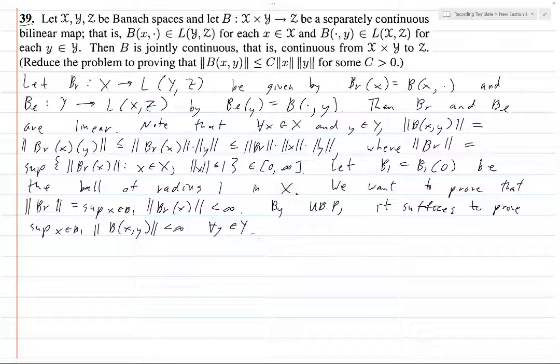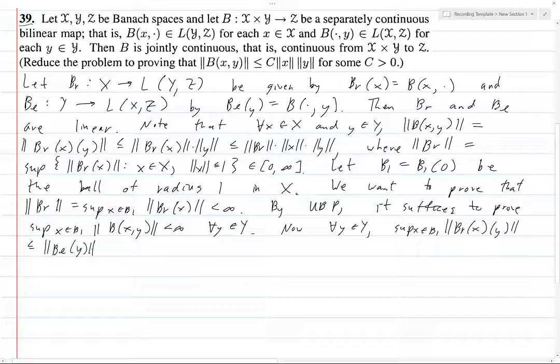So for all y ∈ Y, the supremum over all x in B_1 of ||B_r(x)(y)|| is certainly going to be less than or equal to ||B_l(y)||, and this is finite. And why is that? That is because B_l(y) is B(·, y), and this is a linear functional from X to Z. And so that means it's bounded, so its bound is finite. So that means by uniform boundedness principle that ||B_r|| is finite.